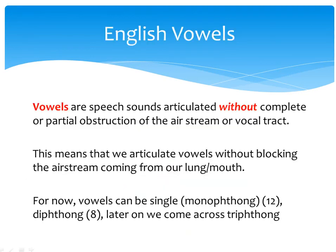Vowels are speech sounds articulated without complete or partial obstruction of the airstream or vocal tract. This means that when we articulate vowels, we do not block the airstream coming from our lungs and mouth. You can see in this gif how we pronounce the 'ah' sound — there is no obstruction of the airstream. We need to know that vowels can be single vowels, called monophthongs — there are twelve of them — and diphthongs — there are eight.